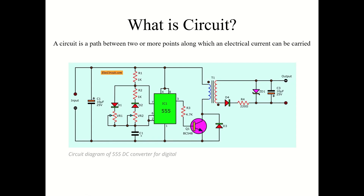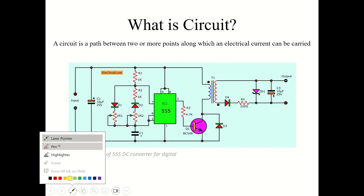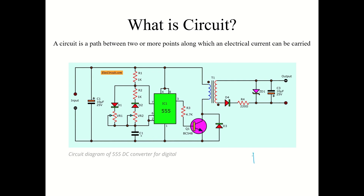Let's start first with: what is a circuit? A circuit is a path between two or more points along which an electric current can be carried. These are two paths as you can see here, along which the current can pass. Whenever there is a closed loop, the current only passes in that way.